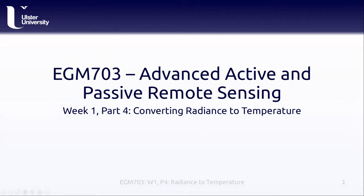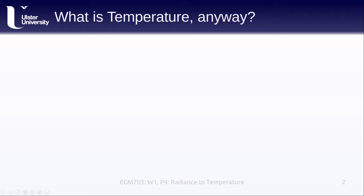Hello and welcome to week one part four of EGM 703, converting radiance to temperature. In this lesson we'll cover how to convert what the sensor actually measures, radiance, into what we want to measure or observe, which is temperature. We'll also talk about a few common satellite missions that we can use for thermal remote sensing applications. First we need to be sure we're clear about what we mean by temperature.